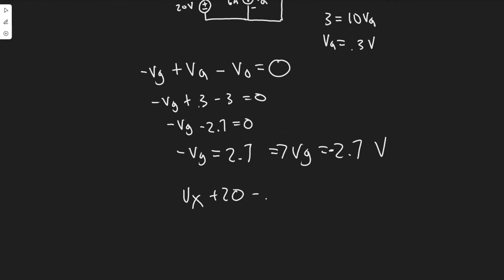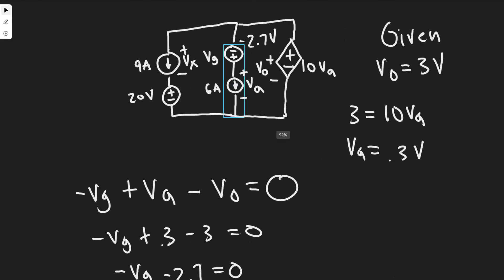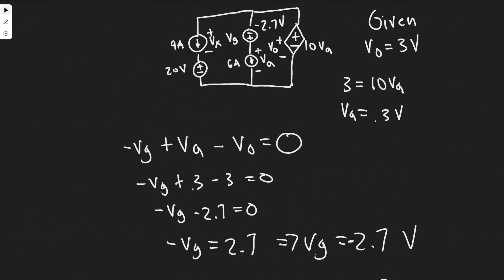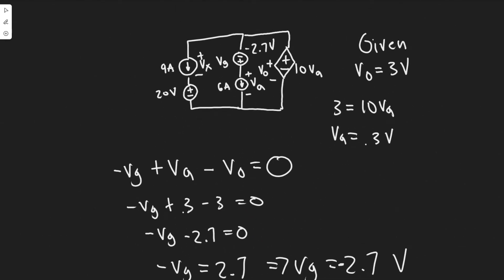Continuing around the loop: minus 0.3, and then entering the positive side of Vg but it's a negative number, so minus 2.7. Setting the sum to zero: Vx plus 20 minus 0.3 minus 2.7 equals 0. Solving, Vx equals minus 17 volts. If you had assumed the opposite polarity, you'd get positive 17.